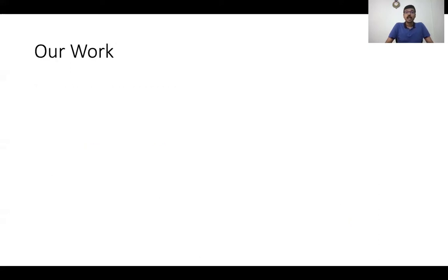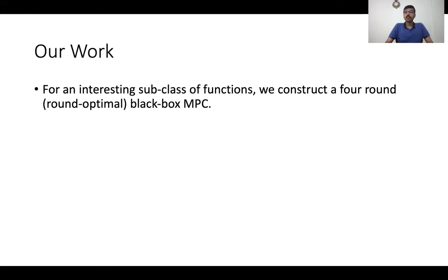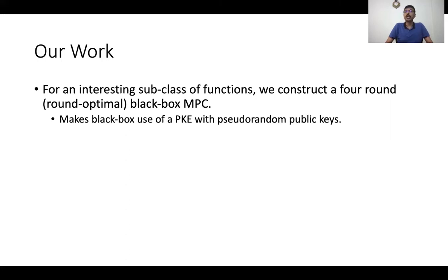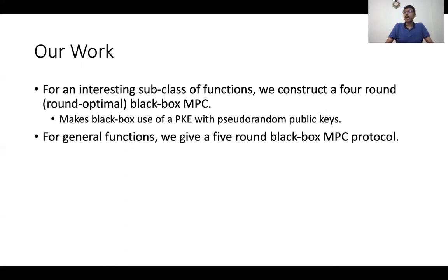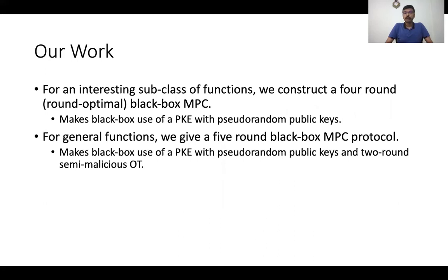We show that this is not the case. In our work, we show that for an interesting subclass of functions, we can construct a round-optimal — that is, a four-round — black box MPC protocol. This protocol makes black box use of a public key encryption scheme with pseudo-random public keys, which can be constructed based on many standard cryptographic hardness assumptions. For general functions, we give a five-round black box MPC protocol, making black box use of a public key encryption with pseudo-random public keys as well as a two-round semi-malicious oblivious transfer protocol.